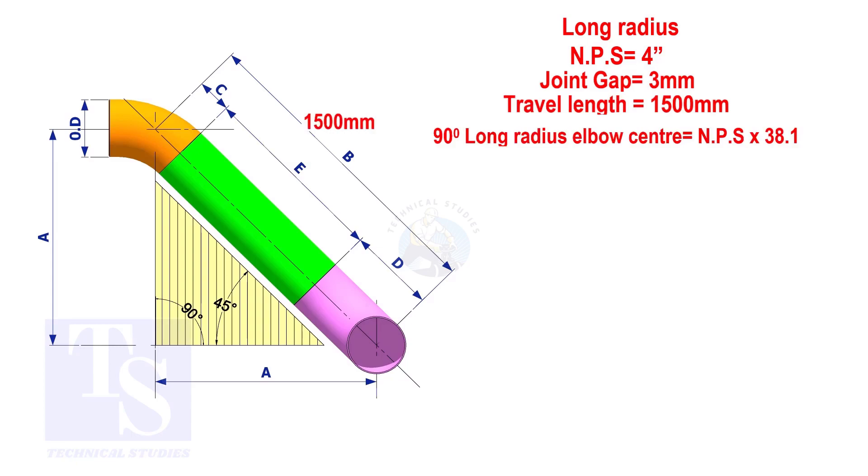The elbow center is the nominal pipe size multiplied by 38.1. So, the elbow center of the 90 degree elbow is 152.4mm.